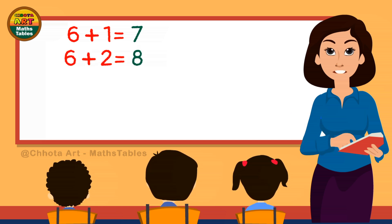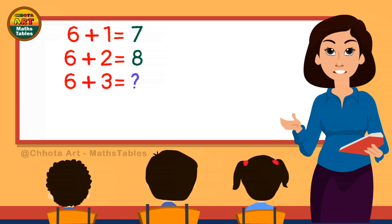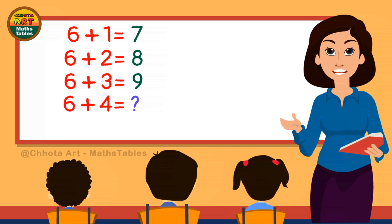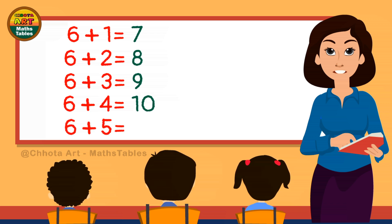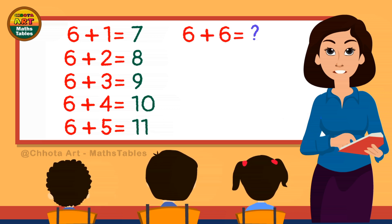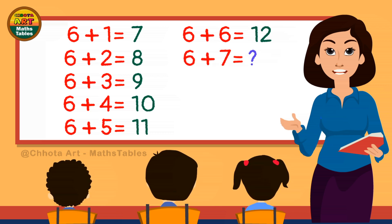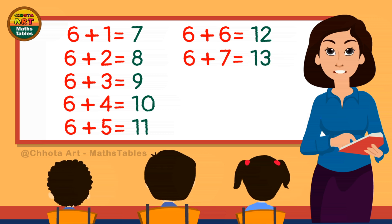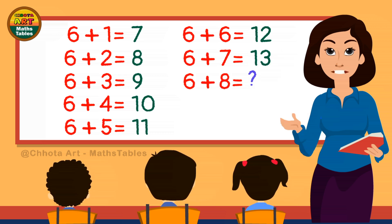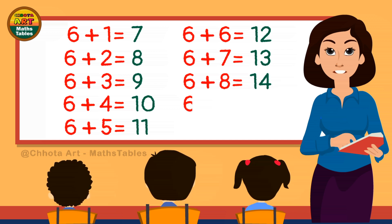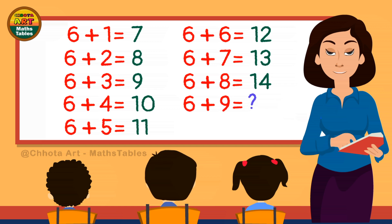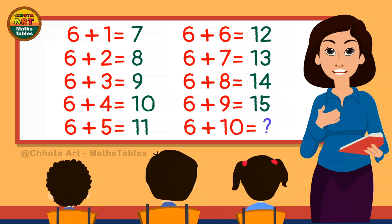6 plus 2 is 8. 6 plus 3 is... 6 plus 3 is 9. 6 plus 4 is... 6 plus 4 is 10. 6 plus 5 is... 6 plus 5 is 11. 6 plus 6 is... 6 plus 6 is 12. 6 plus 7 is... 6 plus 7 is 13. 6 plus 8 is... 6 plus 8 is 14. 6 plus 9 is... 6 plus 9 is 15. 6 plus 10 is... 6 plus 10 is 16.